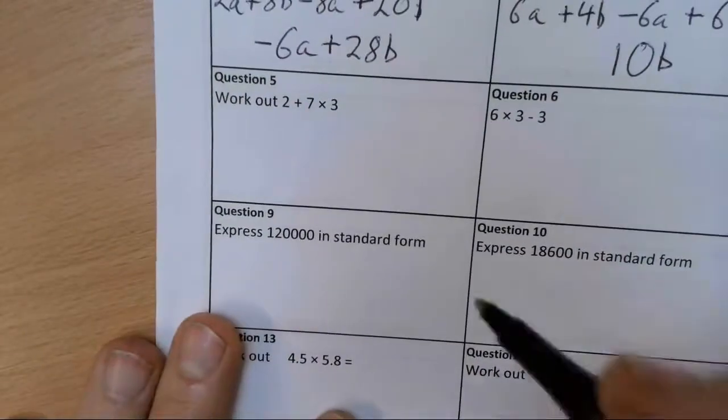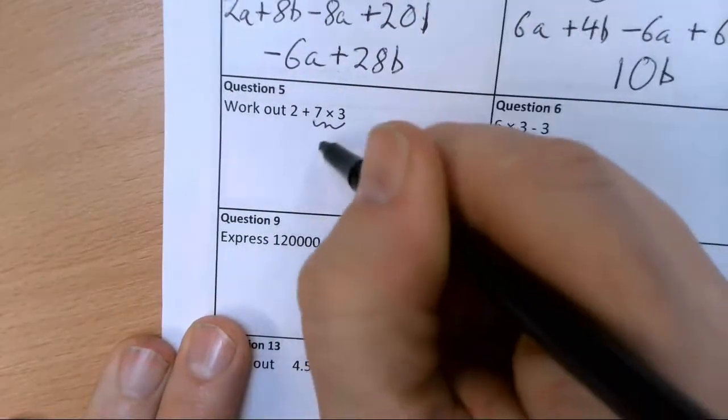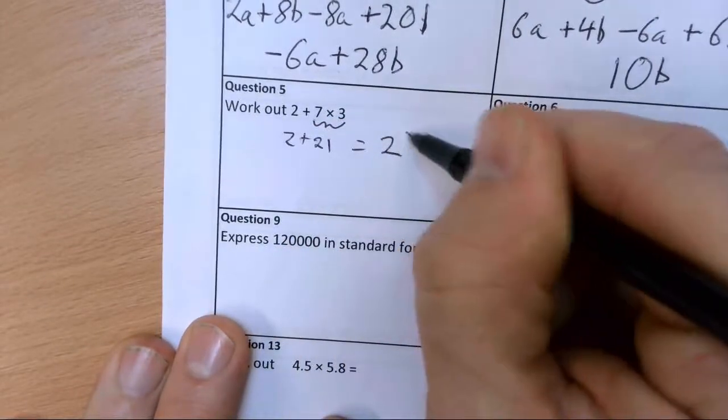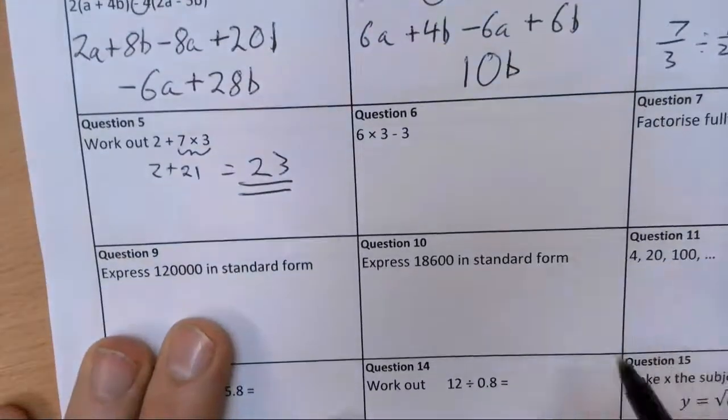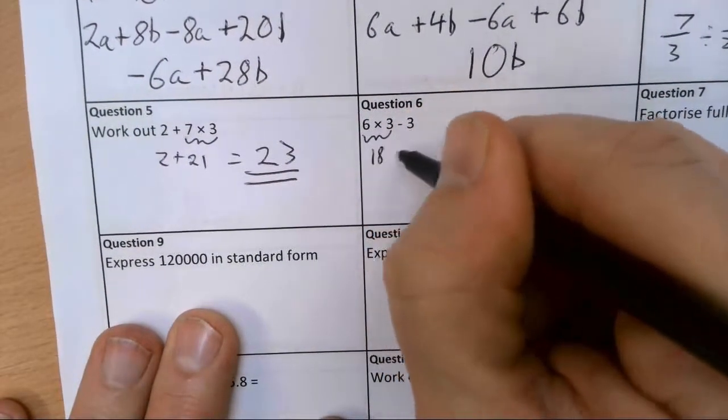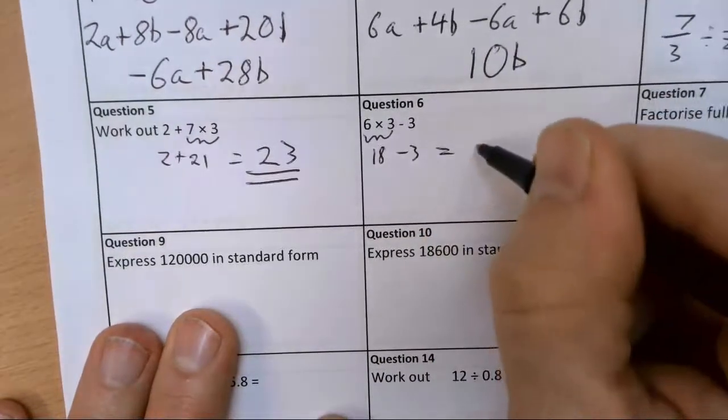Question five, work out 2 plus 7 times 3, a bit of BIDMAS. Need to do that one first. 21, 2 plus 21 is 23. Bit of BIDMAS. Brackets at the start here. So 6 times 3 is 18, take away 3, which gives me 15.